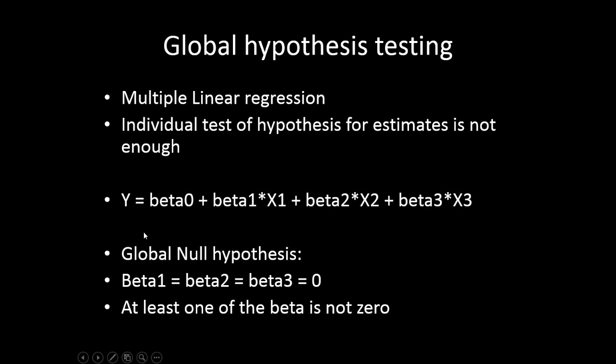Let's say we have a model: Y = beta0 + beta1*X1 + beta2*X2 + beta3*X3. There are three independent variables and we have three estimates. Our global null hypothesis is that all the betas, or all the estimates, are zero. So beta1 = beta2 = beta3 = 0. And the alternative is that at least one of the betas is non-zero.